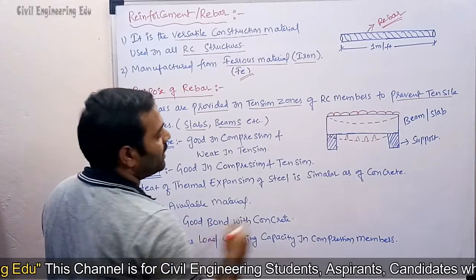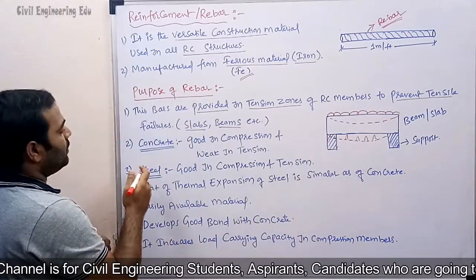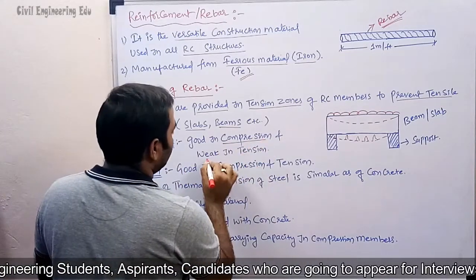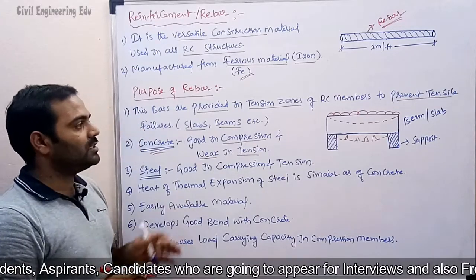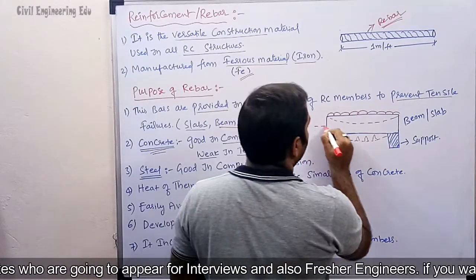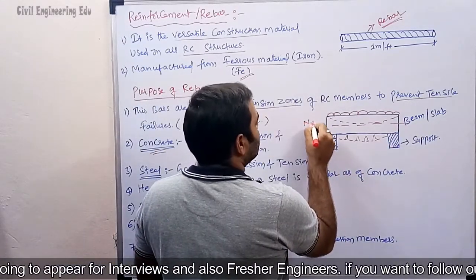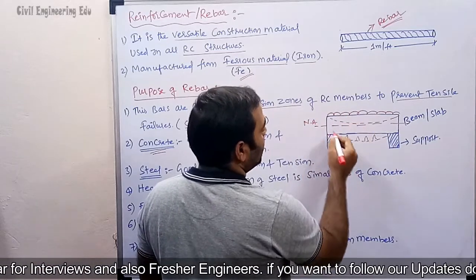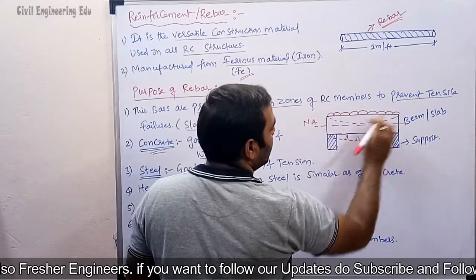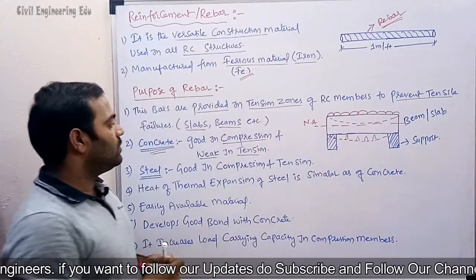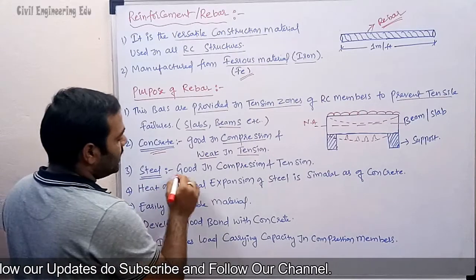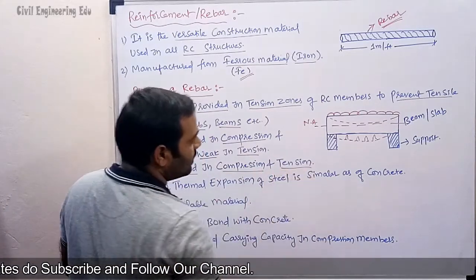Concrete is good in compression and it is weak in tension. This is also one of the important reasons why we provide steel bars mainly in the tension zone. In a beam, the neutral axis divides the section: the top zone is the compression zone and the bottom zone is the tension zone. Concrete is good in the compression zone and weak in the tension zone.